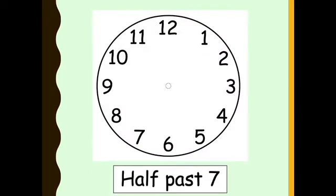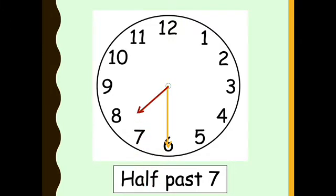This one is half past 7. Where do you think the big hand is going to go? Well done if you said it goes on number 6. And the small hand has just gone past the number 7 — it's not reached 8 just yet, but as you can see it's still on number 7.